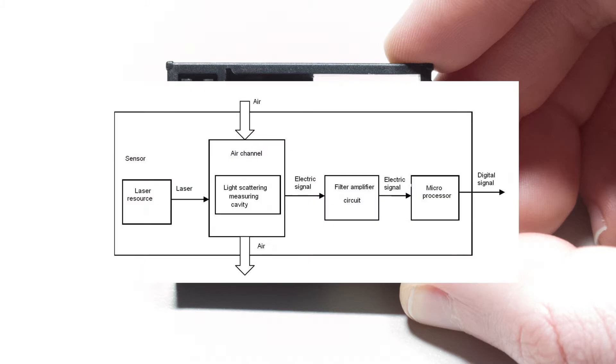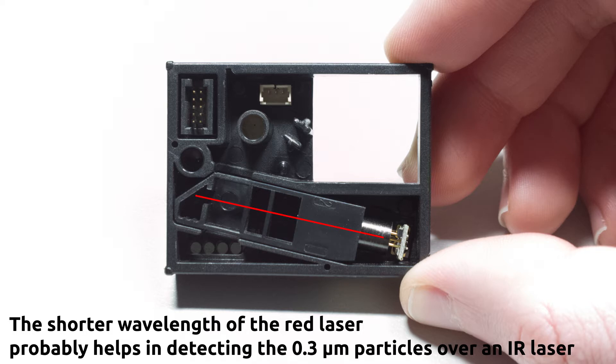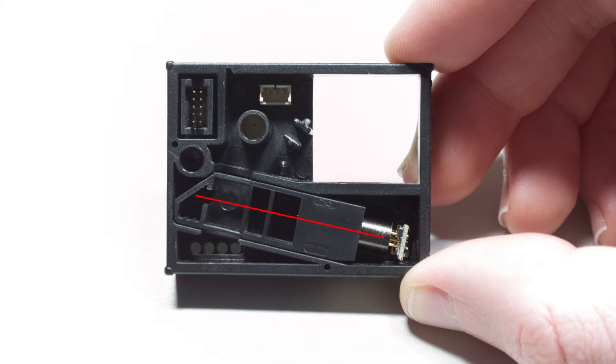This is the block diagram that the manufacturer gives us, so we're going to look at how this light scattering actually works. Unlike a smoke detector that usually uses an infrared LED, this device has a surprisingly red laser, and it shines through here, shines through these two light baffles, and then into this light trap at the end. And that's just to stop any stray reflections from hitting the photodiode at the bottom here.